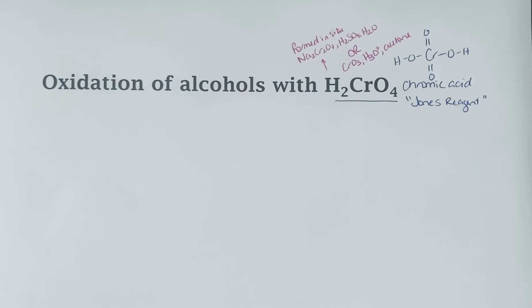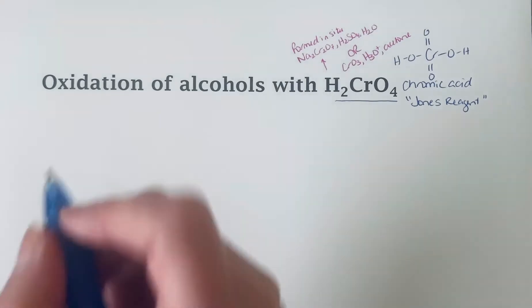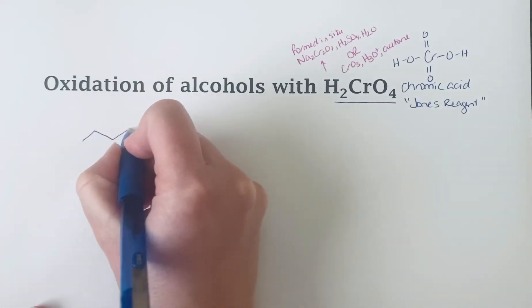And so what chromic acid does is it can oxidize an alcohol into a carbonyl containing compound. So if you have a primary alcohol